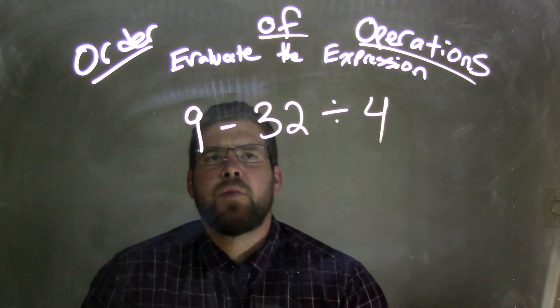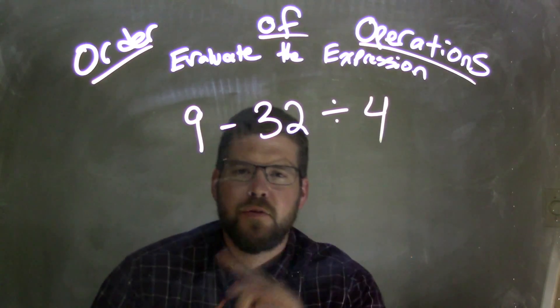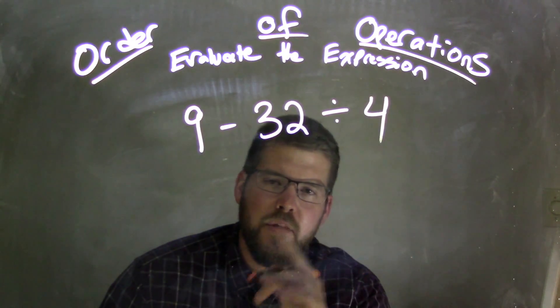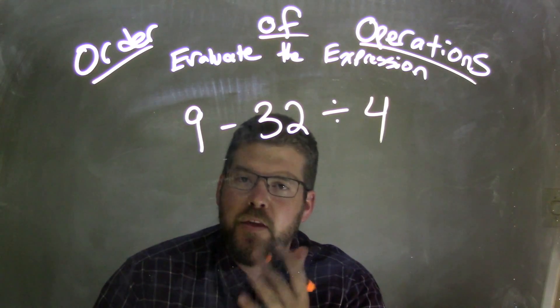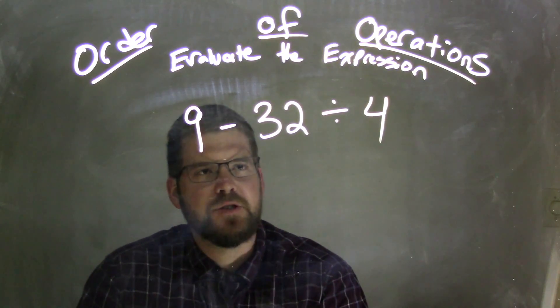Well, 9 minus 32 divided by 4, which one comes first? Division or the subtraction? The division. The division comes first before the subtraction.